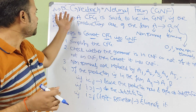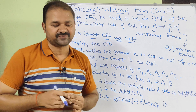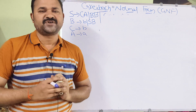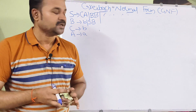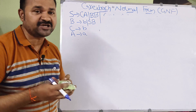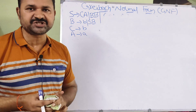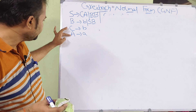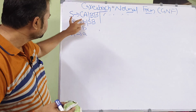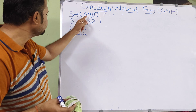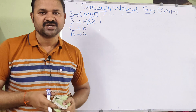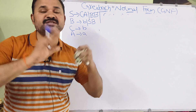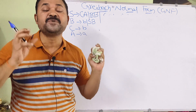Now let us convert this context-free grammar into GNF with an example. First, check whether it is a simplified grammar. This grammar does not contain any unit productions or epsilon productions. The starting symbol S produces CAB, and all non-terminals are defined — A, B, and C each produce terminals. There are no useless symbols, so this grammar is already simplified.